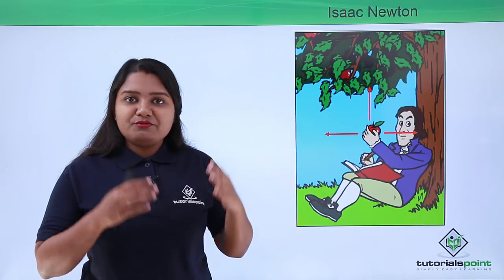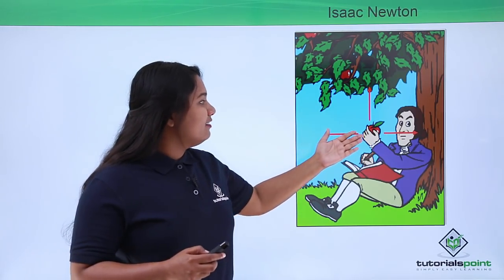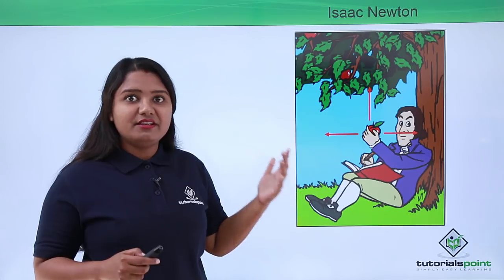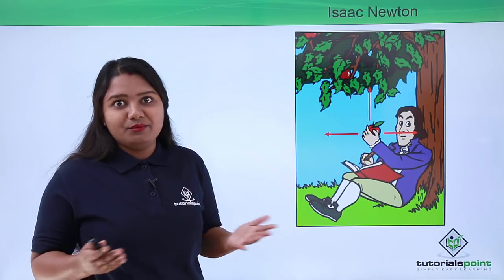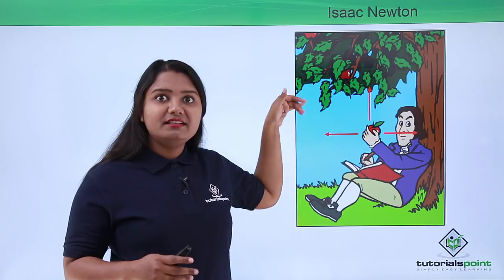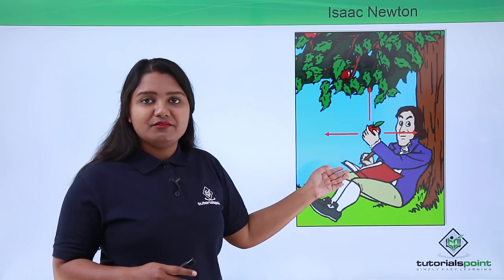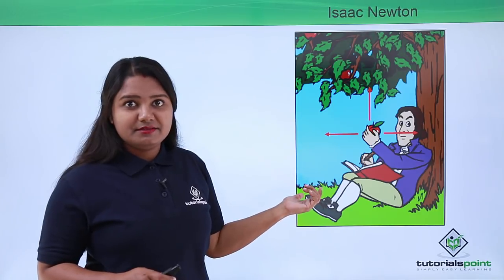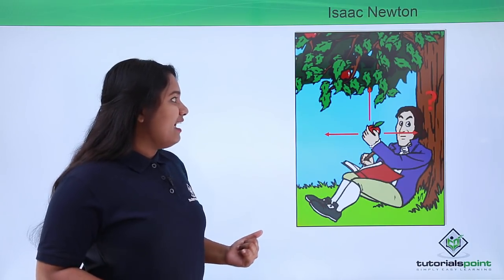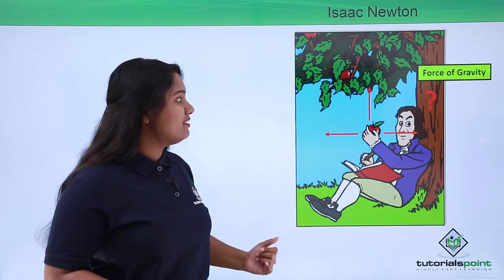Whenever an apple falls on us, most of us would think about eating it. But this man was genius enough, intelligent enough, to think something different. He didn't think of eating it — maybe he was not hungry. Anyway, this apple didn't move in any other direction but preferred moving downward and hit the ground. He posed this question to himself, researched it, and eventually got the answer — which was a revolution. The answer he got was the force of gravity of the earth.